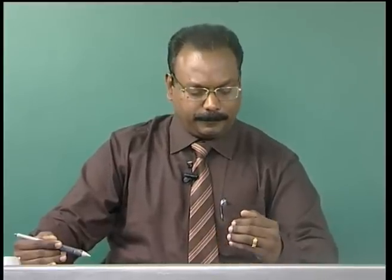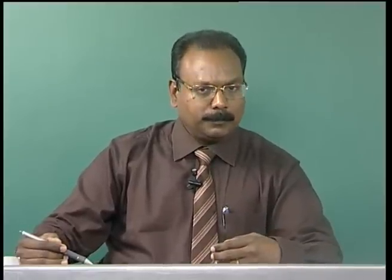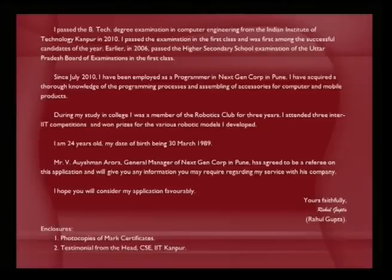He says 'I am 24 years old, my date of birth being 30th March 1989' — just a minor personal detail, with more details expected from the bio data. There is a single-line reference: Mr. V. Oisman Arora, General Manager of Next Gen Corporation in Pune, has agreed to be a referee and will give any information required regarding his service with the company. He closes with 'I hope you will consider my application favorably,' signs as Raghu Gupta, and encloses photocopies of mark certificates and testimonials.